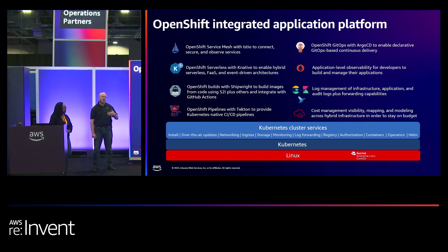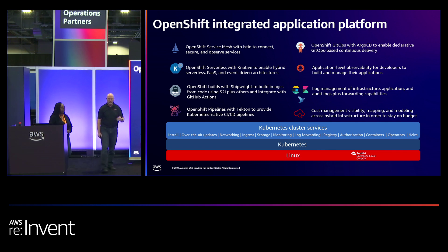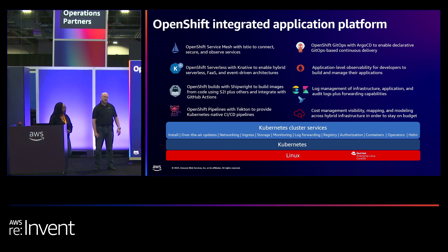We're able to do that with GitOps, DevOps, and now platform engineering. Just at the beginning of November, we released a new capability in ROSA. ROSA is our managed service offering in AWS — OpenShift delivered as a managed service.